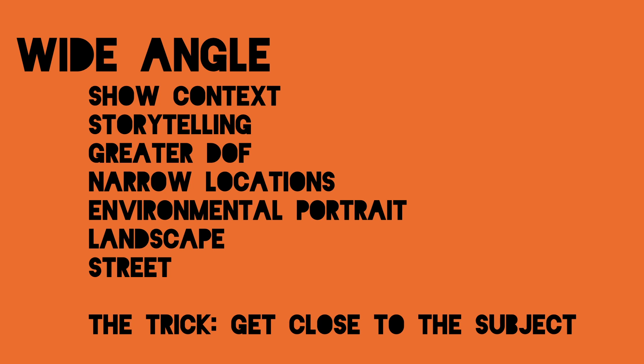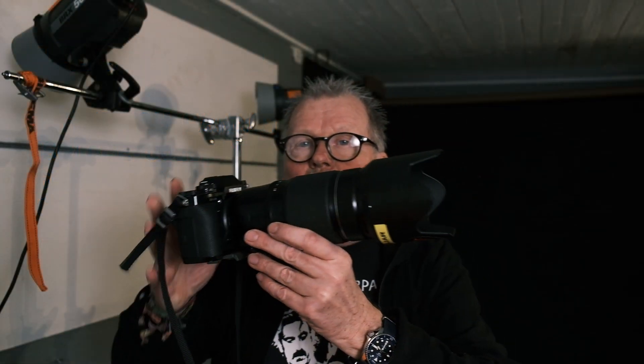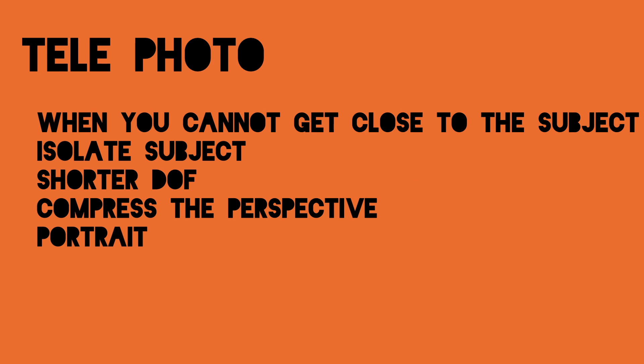A trick with wide angle lenses is getting closer to the subject. Then you have telephoto lenses — this is a 50 millimeter, and on APS-C that I use, it's a short telephoto lens. You may be more used to seeing the longer ones, often a zoom lens that is really big. When do you use a telephoto lens? Sometimes you cannot get close enough to your subject. There's also shorter depth of field, so you can more easily isolate the subject. You can also compress the perspective with a telephoto lens.